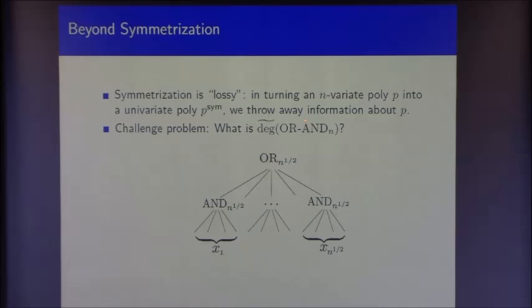The OR-AND tree was a challenge problem because it was the simplest function that symmetrization seemed to break down for. The function is simply a read-once DNF — a depth-2 Boolean circuit. For simplicity, I'll assume it's balanced, so every gate in the circuit has fan-in √n. Each x_i has √n variables within it, and there are √n of the x_i's.